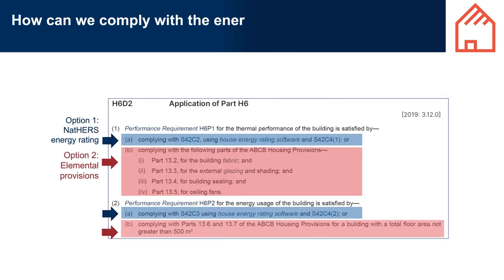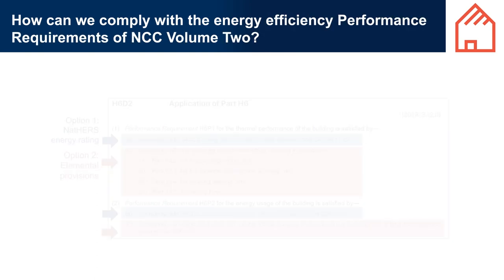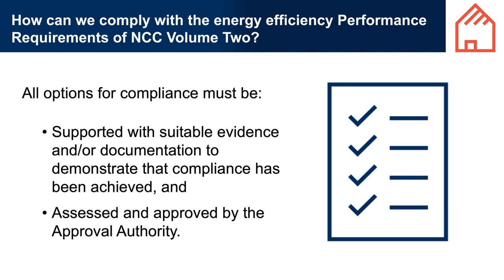All options for compliance must be supported with suitable evidence and/or documentation to demonstrate that compliance has been achieved and assessed by the Approval Authority. A designer or builder can choose to use a performance solution instead of the DTS provisions for any aspect of the performance requirements. For example, they could comply with a different standard such as the Passive House standard and present the Approval Authority with evidence that this meets or exceeds the thermal performance and building sealing provisions of the NCC, or use the reference building verification method to demonstrate compliance.